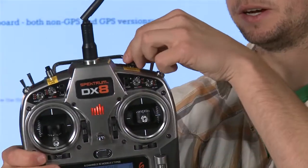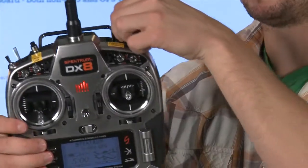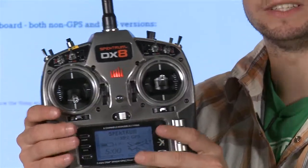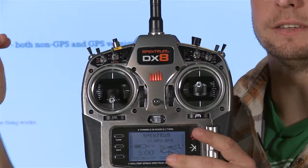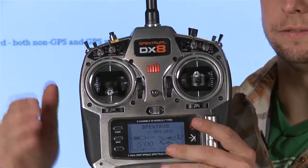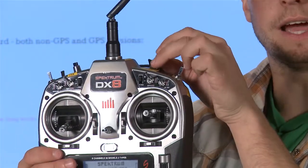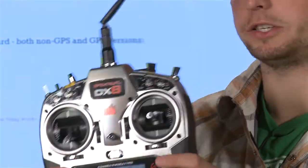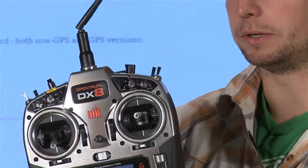And then we have a knob up here. It's the remote gain knob. This knob allows you to adjust the gain inside the gyros of the NASA flight control board when you're flying. So if it feels like it's too sensitive, you can dial it down. If it feels like it's too wishy-washy, you can dial it back up. Really cool feature.